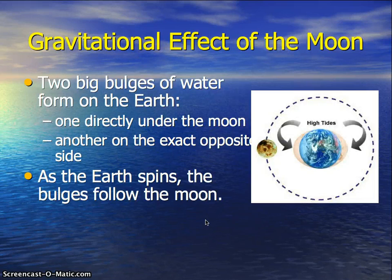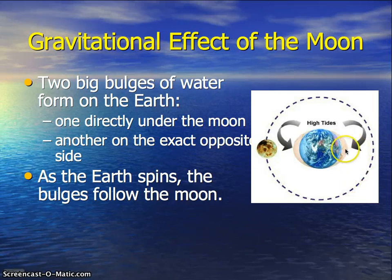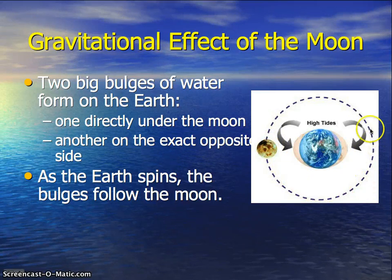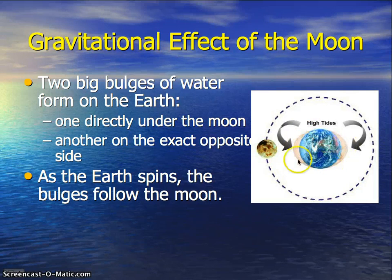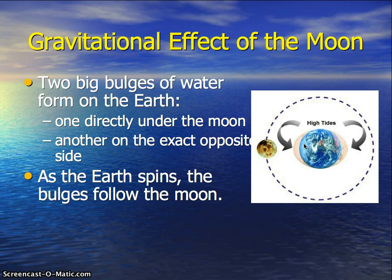The moon causes two tidal bulges on Earth — one directly beneath the moon and one on the directly opposite side. As the Earth rotates once on its axis during the lunar day, the bulge stays in place while the Earth moves below it, which is why tides are essentially a giant wave. The planet moves under the bulge of water, so where there are oceans you get high and low tides, and where there are no oceans there is no effect.